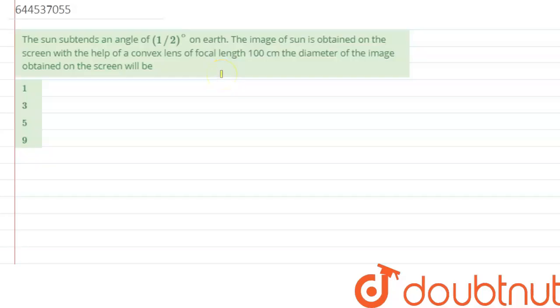The question says: the sun subtends an angle of half a degree on Earth. The image of the sun is obtained on a screen with the help of a convex lens having focal length 100 centimeters. What will be the diameter of the image obtained on the screen?